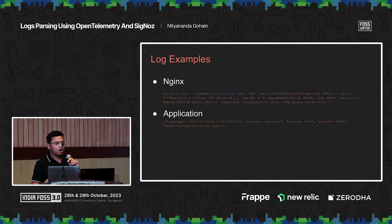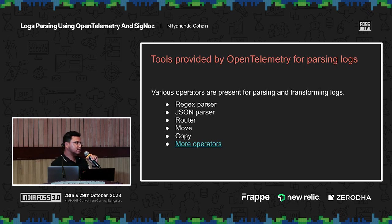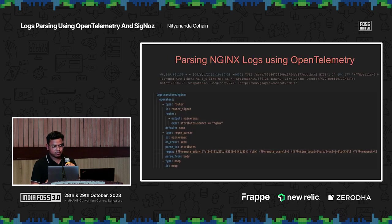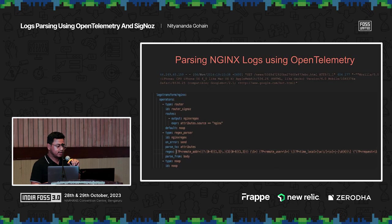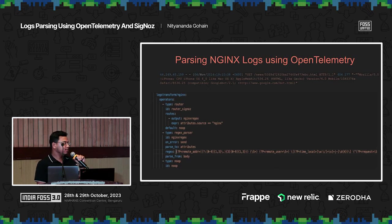OpenTelemetry provides a way to write configurations where you can parse these log lines. It provides various kinds of operators like a regex parser, JSON parser, and a router. With these you can write configurations to parse your log lines. Here is an example config for parsing the Nginx log — we have a router which says that any logs with source Nginx will be parsed by the Nginx parser. In that parser, we write a regex to extract different attributes out of the log line: remote address, remote user, time local, and other fields.